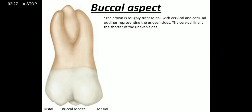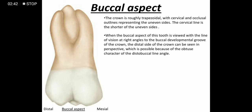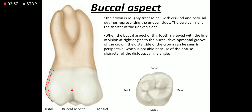Buccal aspect. The crown is roughly trapezoidal with the cervical and occlusal outline representing the uneven sides; the cervical line is the shorter of the uneven sides. When the buccal aspect of this tooth is viewed with the line of vision at a right angle to the buccal developmental groove of the crown, the distal side of the crown can be seen in perspective, which is possible because of the obtuse character of the distobuccal line angle.